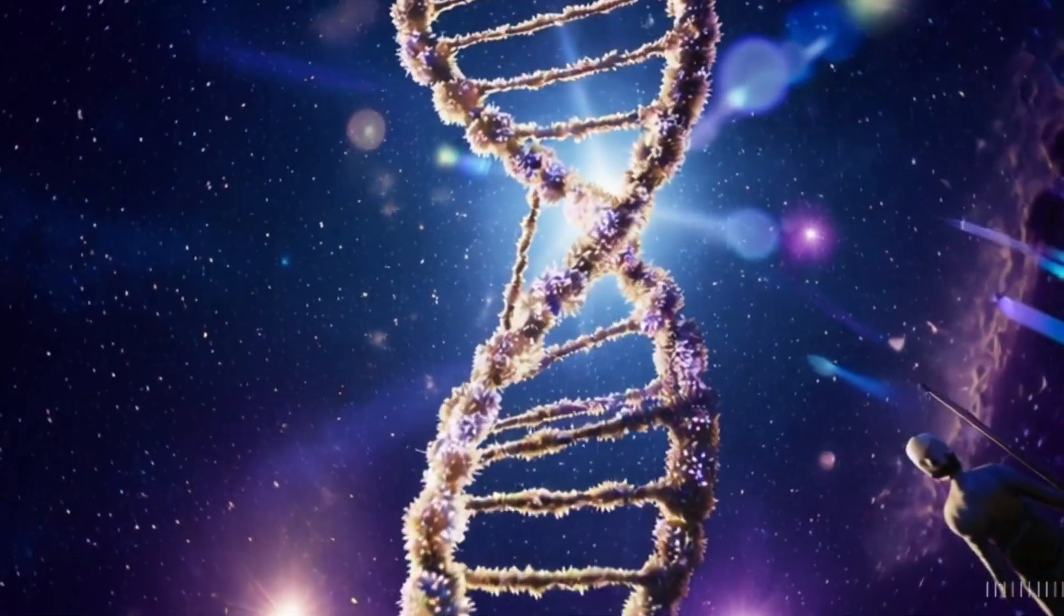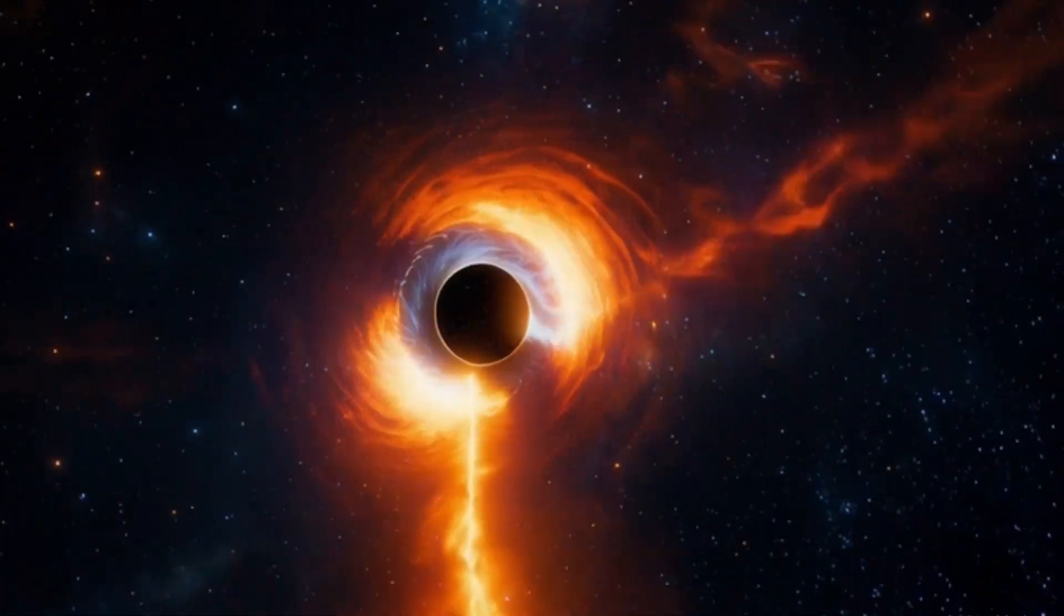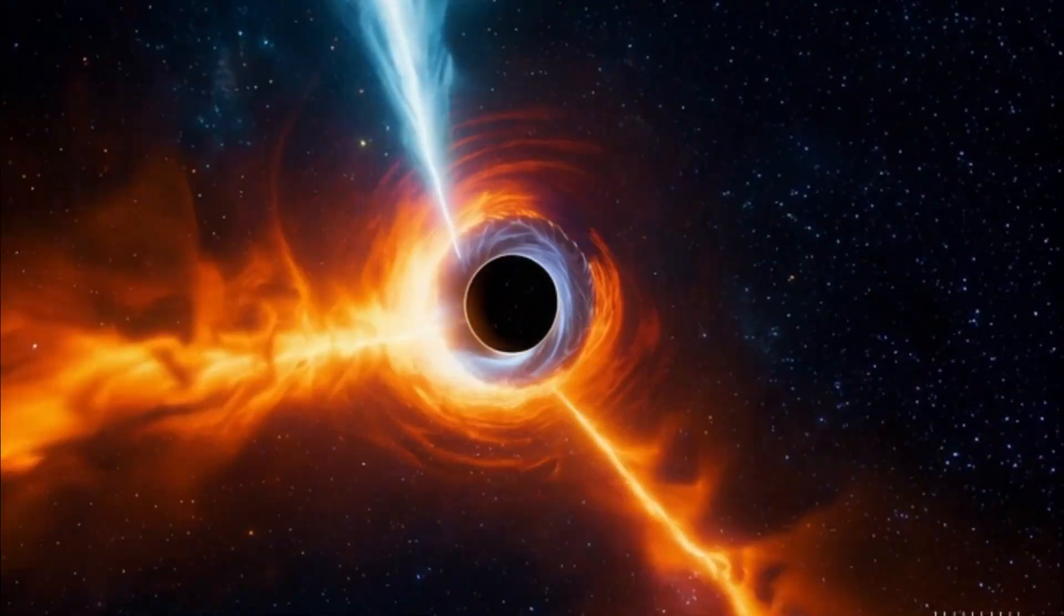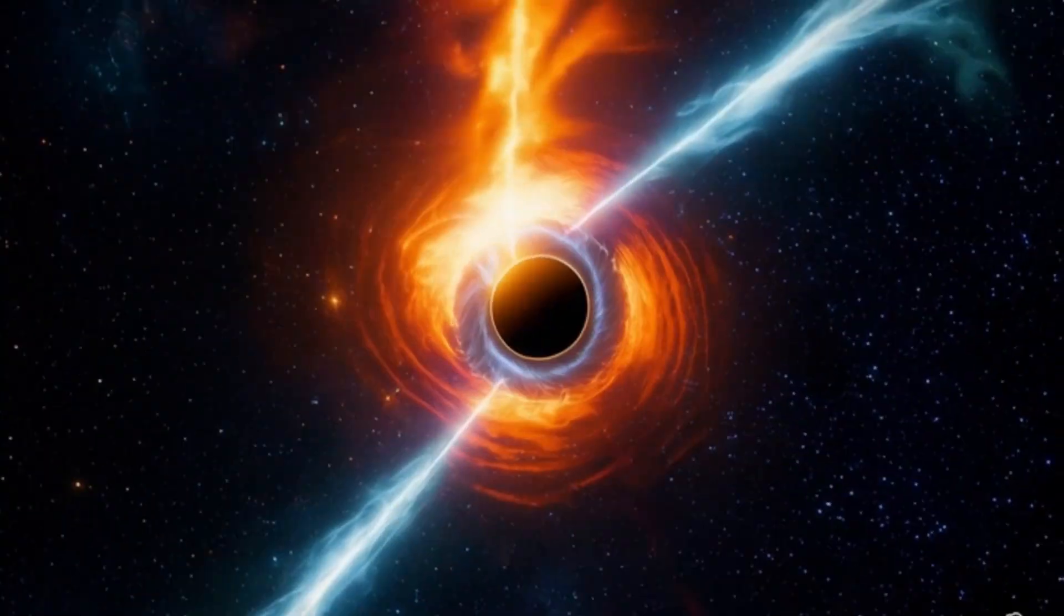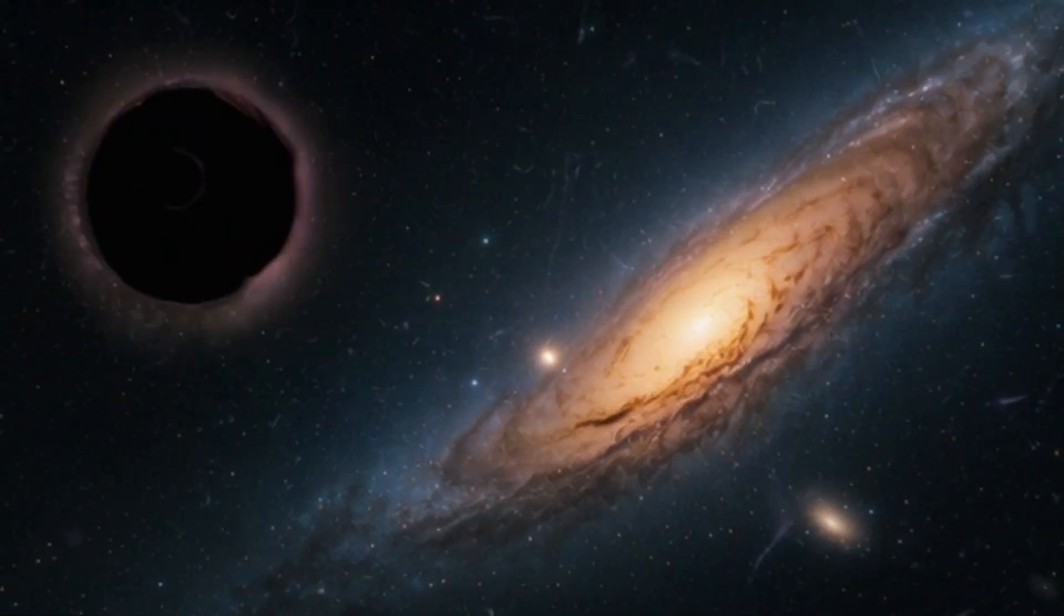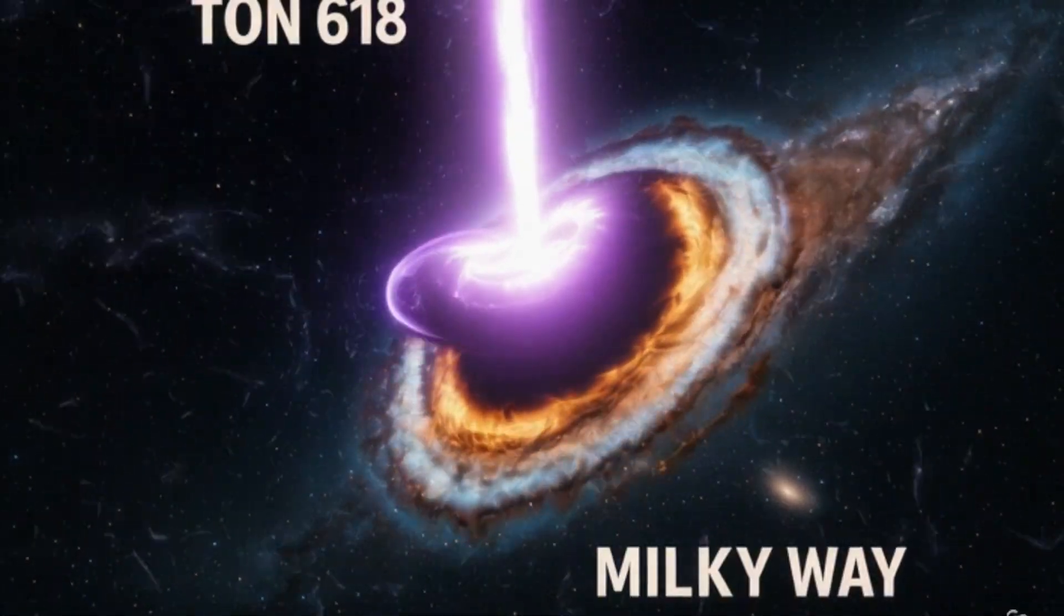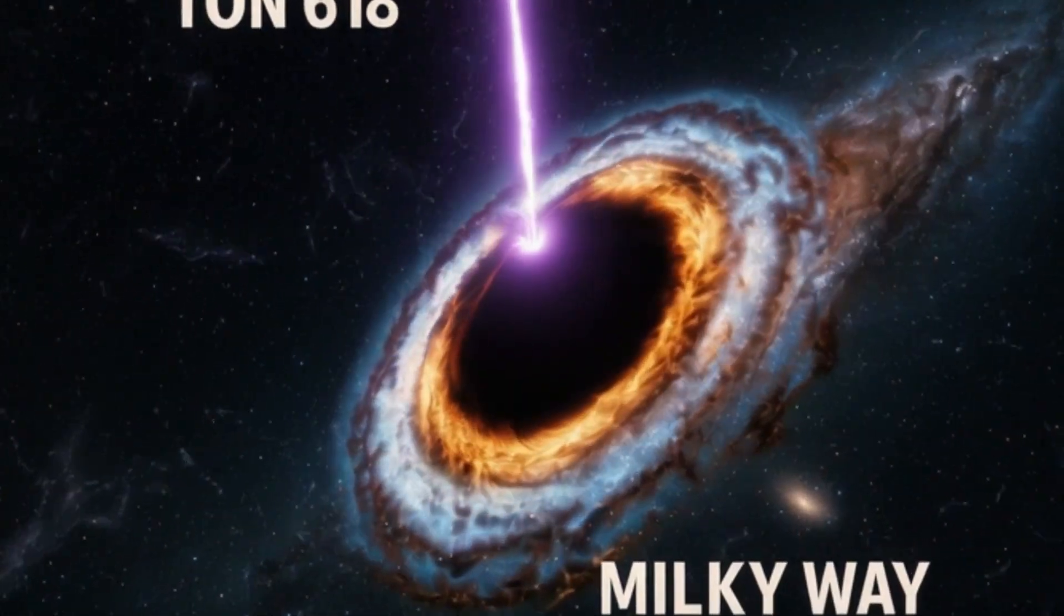Let's visualize it. If we replaced our Sun with TON618, its event horizon, the point of no return, would stretch well beyond Pluto. Entire star systems would orbit inside it like dust in a wind tunnel. TON618 could devour the Milky Way multiple times over.